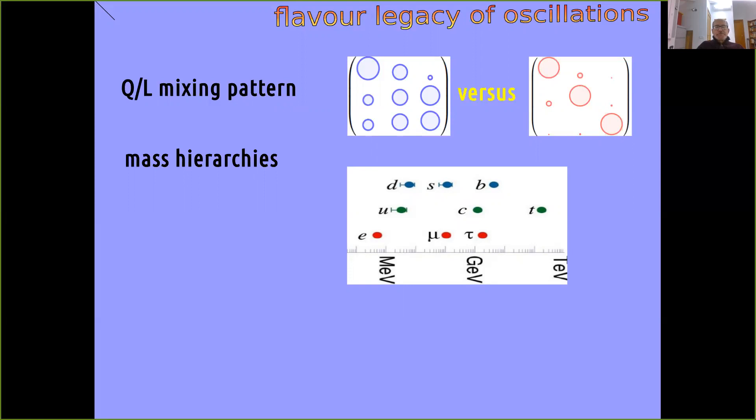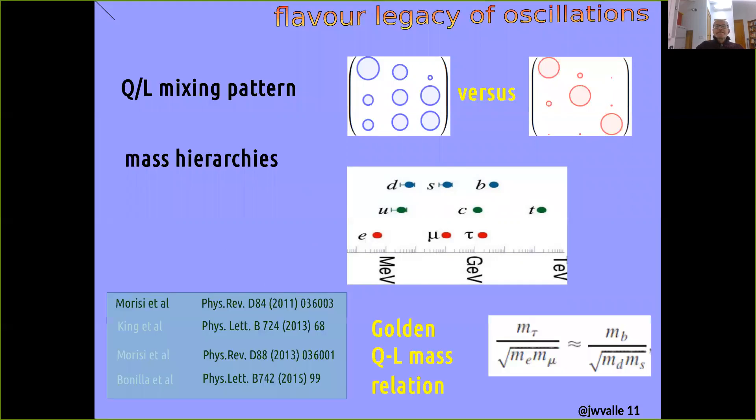And perhaps more important than that is the fact that in a number of attempts to understand why nature behaves this way, leptons mix the way they do, completely different from quarks, one has come about a very simple relation which does not explain the whole oddness of the observed pattern of charged fermion masses, but perhaps gives a first step towards an understanding of this pattern. And that is this golden quark-lepton mass relation that I show here.